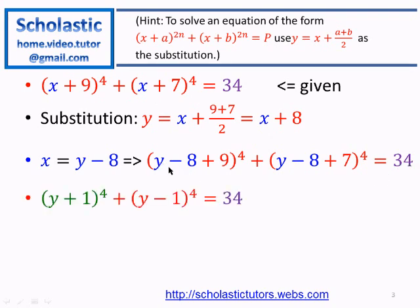Now we simplify inside the brackets: (y − 8 + 9) = (y + 1) and (y − 8 + 7) = (y − 1). So we get (y + 1)⁴ + (y − 1)⁴ = 34.